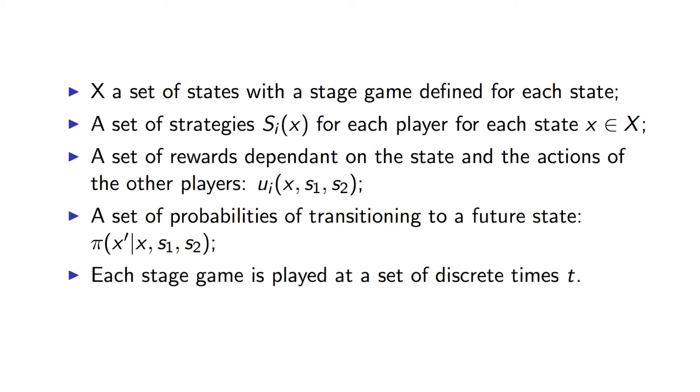The best way to think of a Markov game or a stochastic game is people playing games of chance in a casino, and there are lots of games at different tables. Once they play the game, depending on the outcome of what happens at that particular game, they'll move to another one.